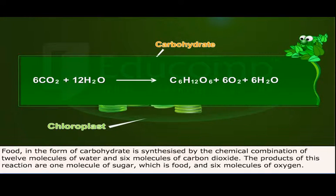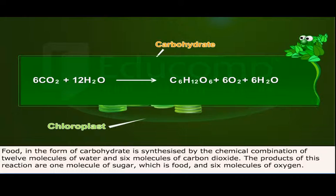Let us understand precisely what happens during photosynthesis. Food in the form of carbohydrate is synthesized by the chemical combination of 12 molecules of water and 6 molecules of carbon dioxide. The products of this reaction are 1 molecule of sugar, which is food, and 6 molecules of oxygen.